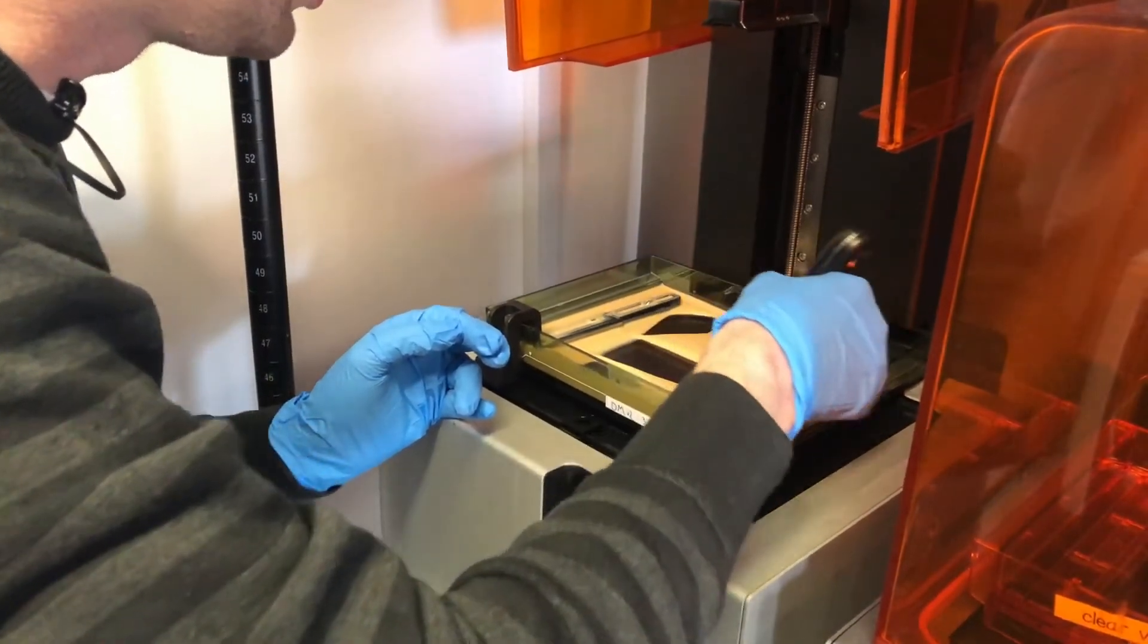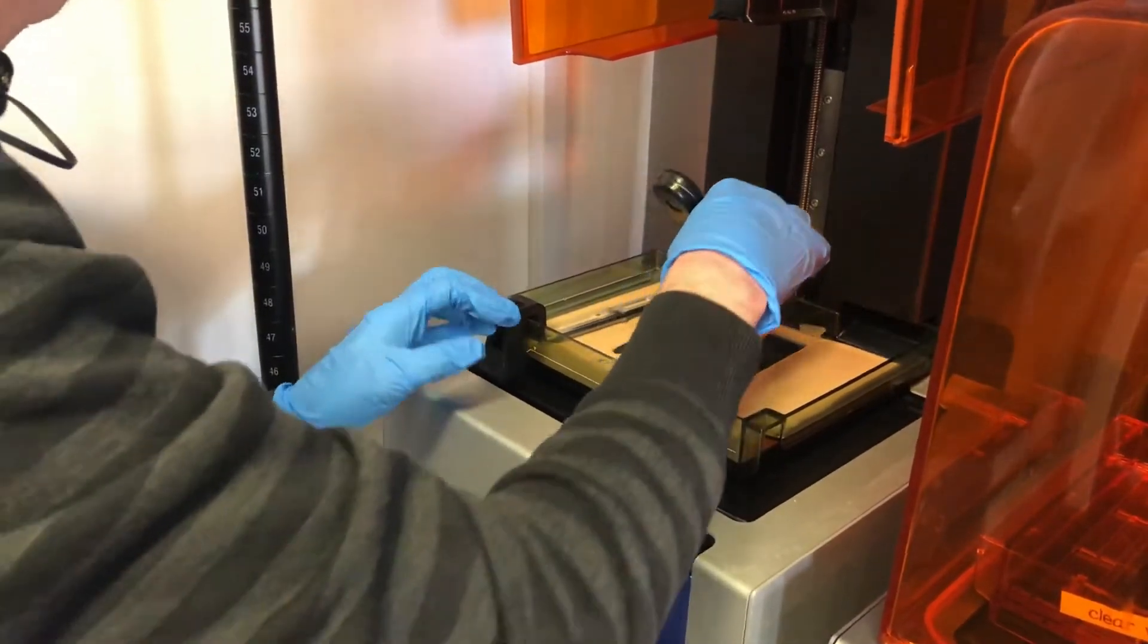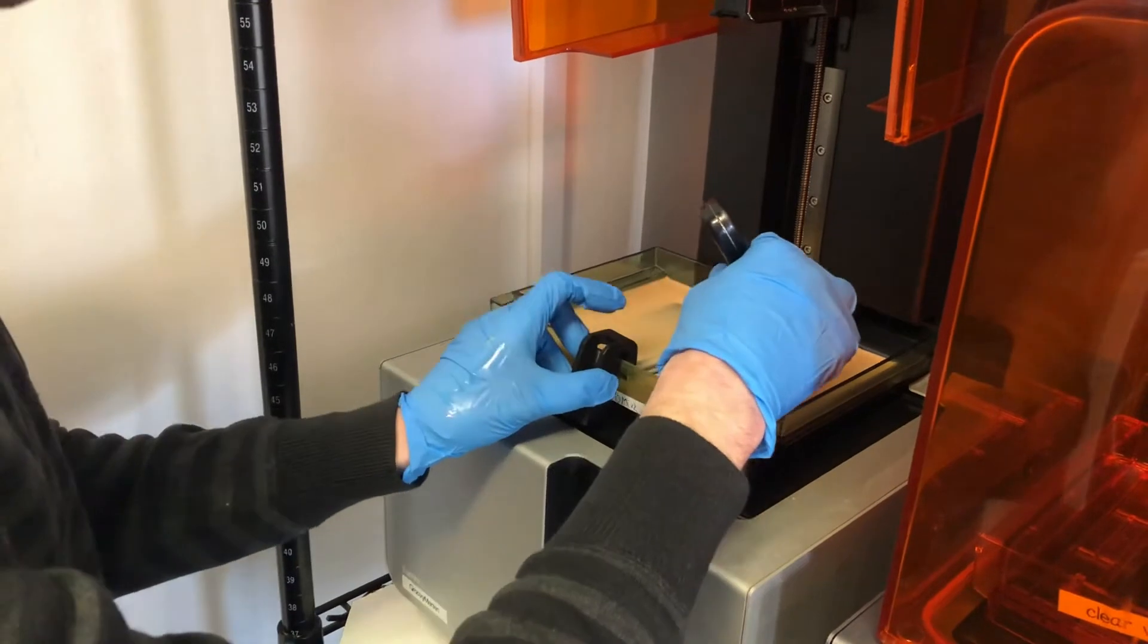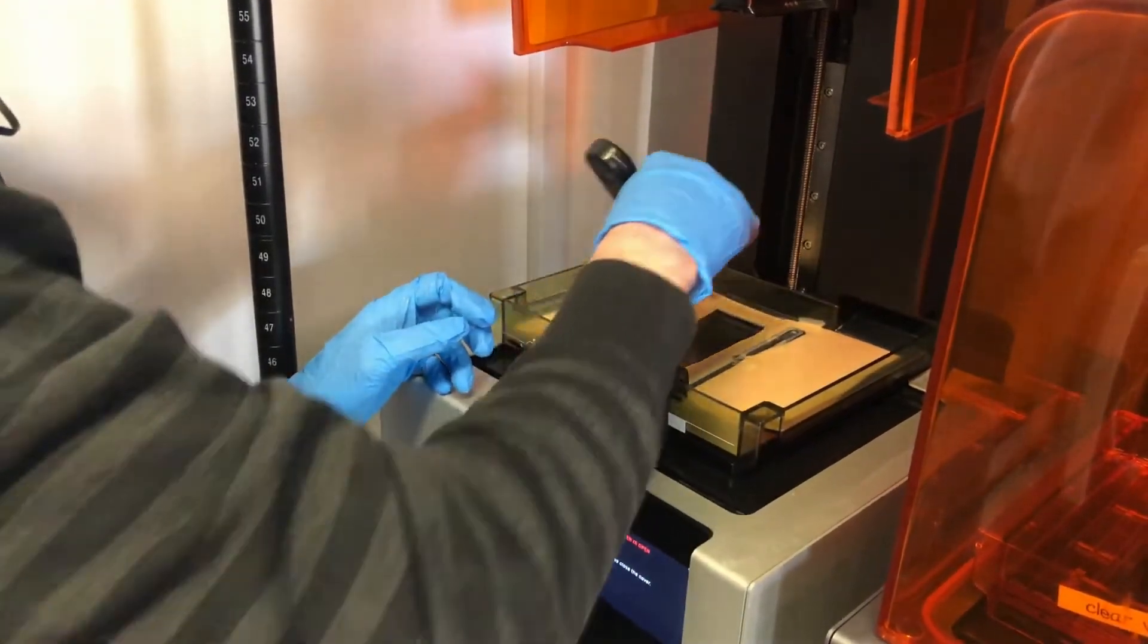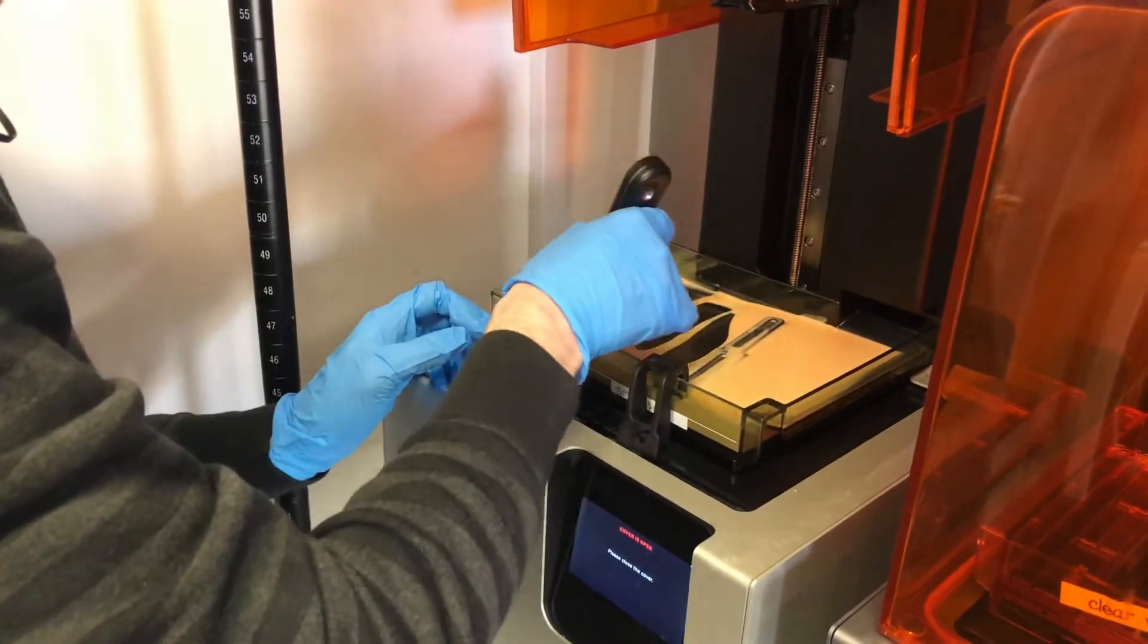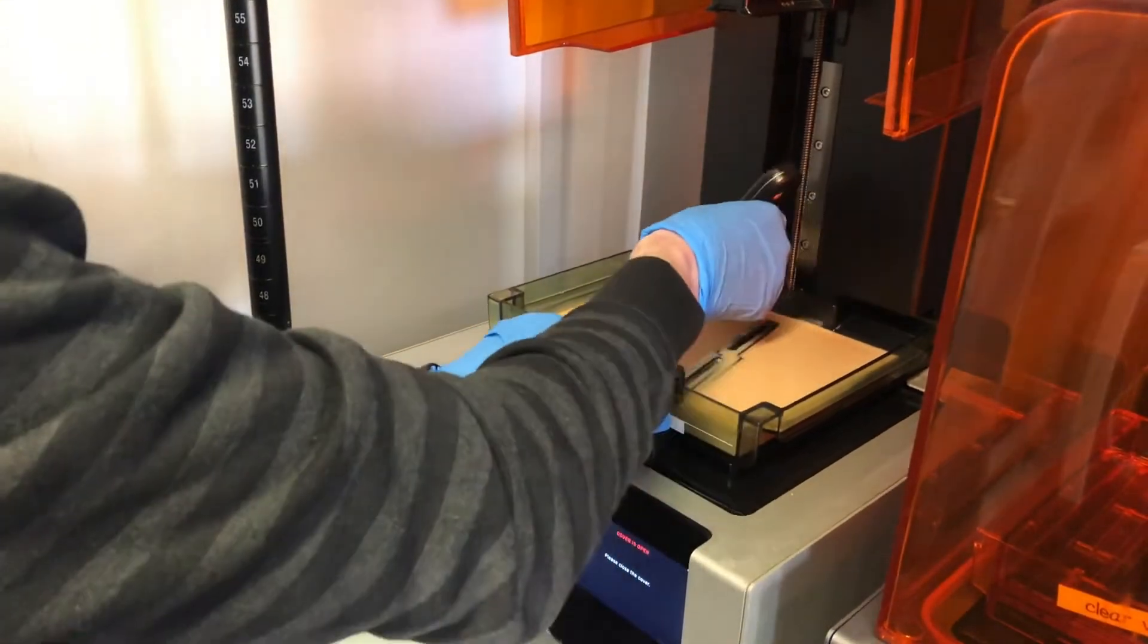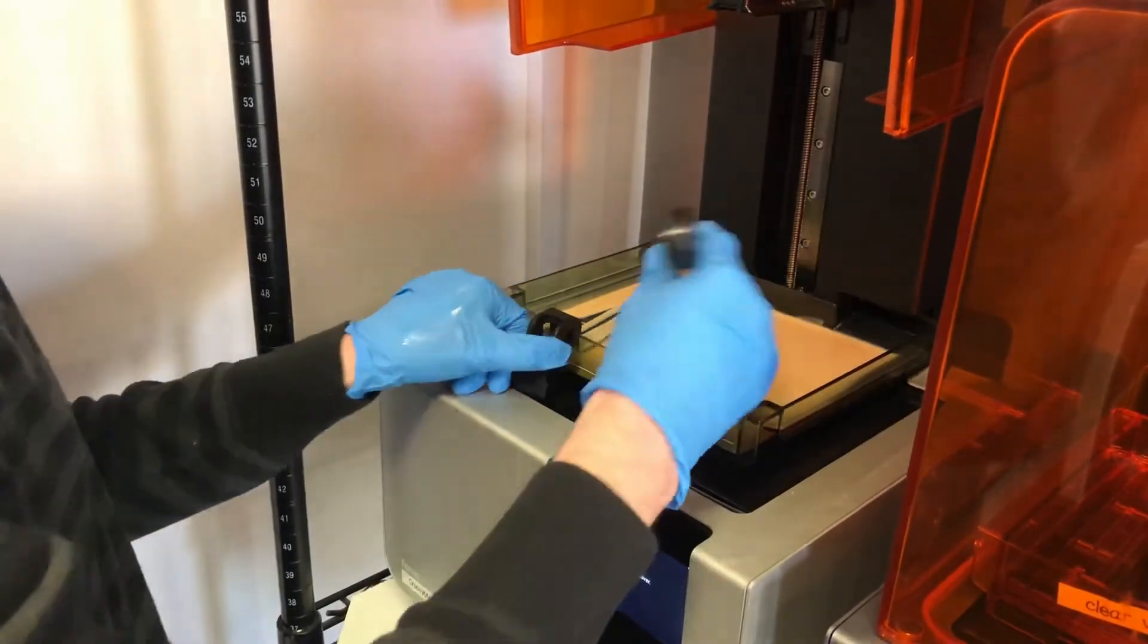This is getting anything that's sort of settled to the bottom mixed up, so our optical path for the resin tank is as clear as possible. Go through the whole thing, slide it over to the left. This resin tank is in perfect shape now.